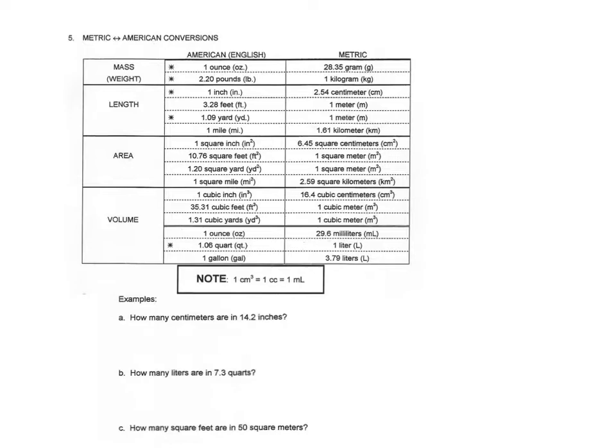The first step in these problems is to decide which type of unit you have. We cannot change from mass to length, area, or volume — we can't change between those different types. These metric-to-American conversions are going to stay within one of the major categories: either mass, length, area, or volume.